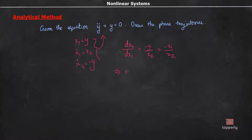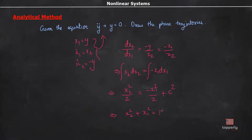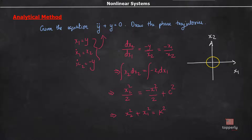If we cross multiply this equation, we get x2 dx2 equal to minus x1 dx1. Integrating on both sides, we get x2 squared by 2 equal to minus x1 squared by 2 plus c. Rearranging, we get x1 squared plus x2 squared equal to k squared. We can see that this equation represents a family of circles centered at the origin. So the phase trajectories are drawn as a family of concentric circles centered at the origin on the x1-x2 plane.